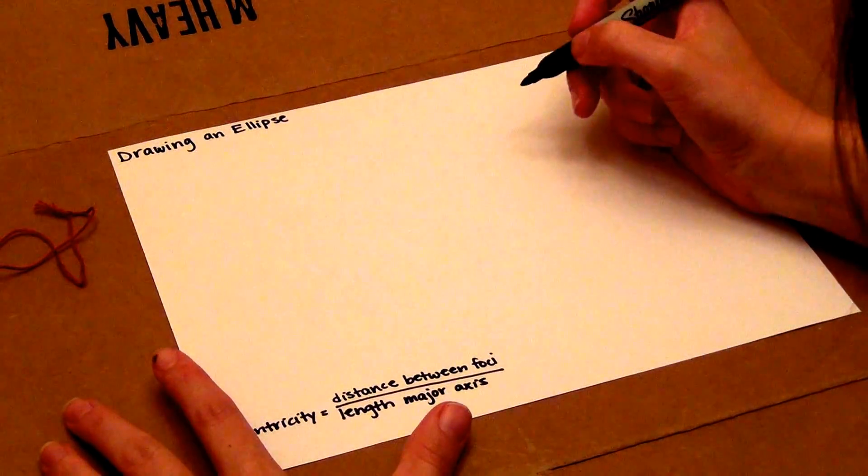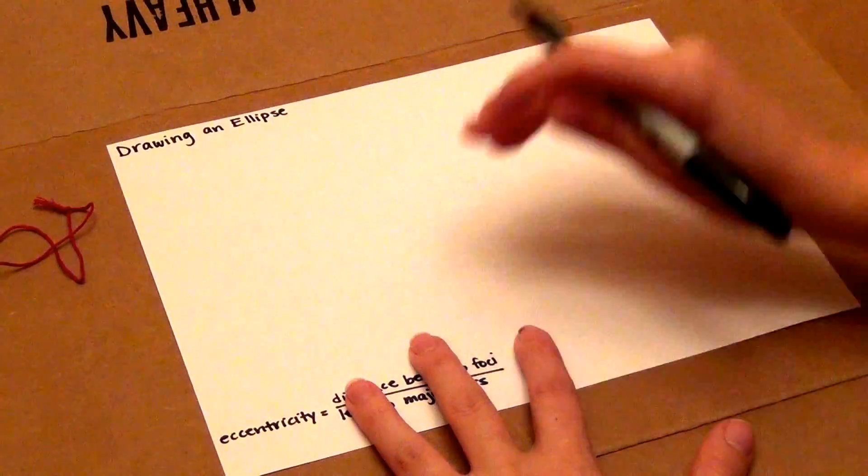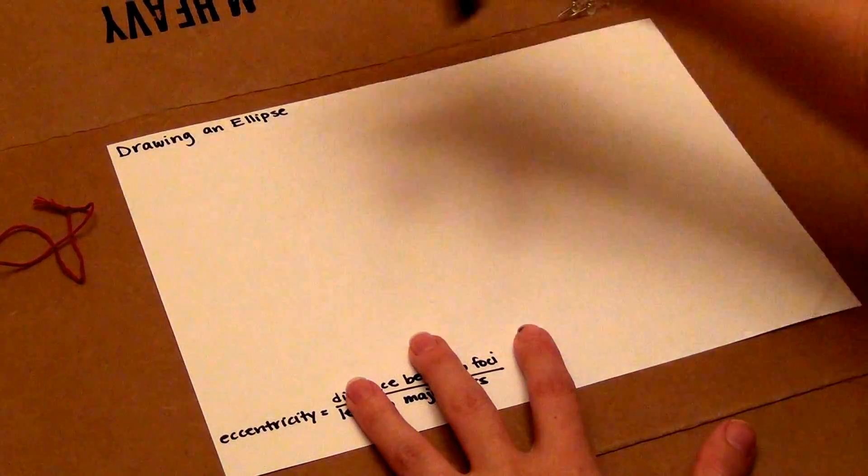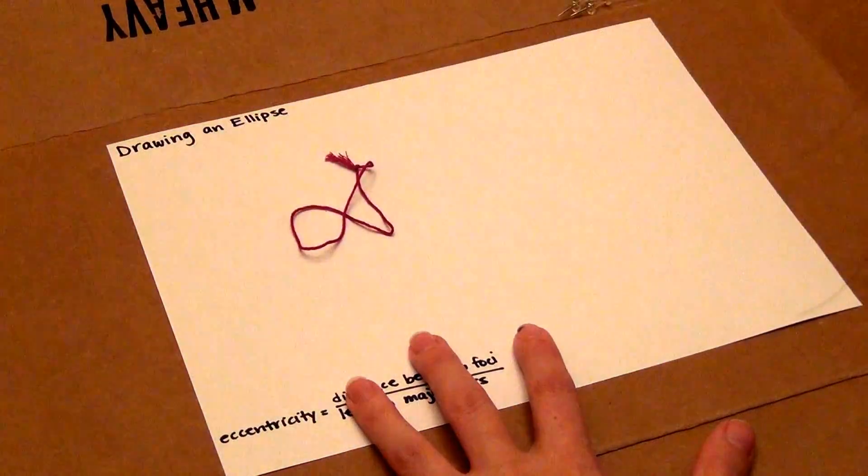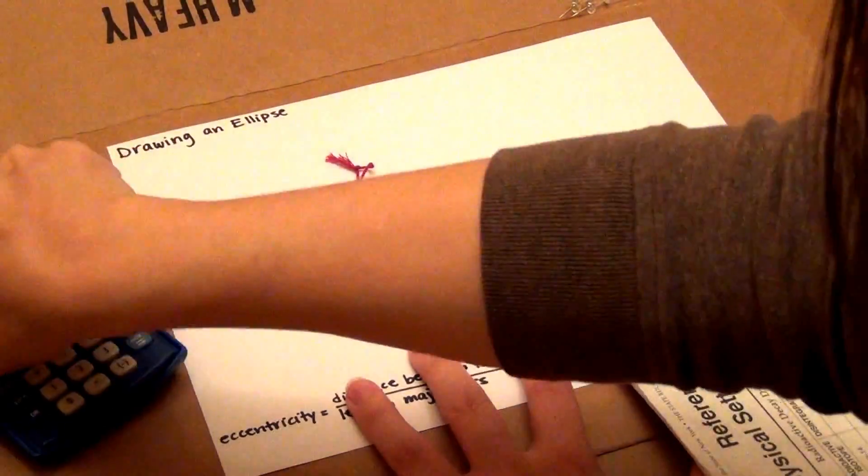Okay, we're going to draw an ellipse and calculate its eccentricity. So in order to do that, you need thumbtacks, a piece of string, your reference table, and a calculator.